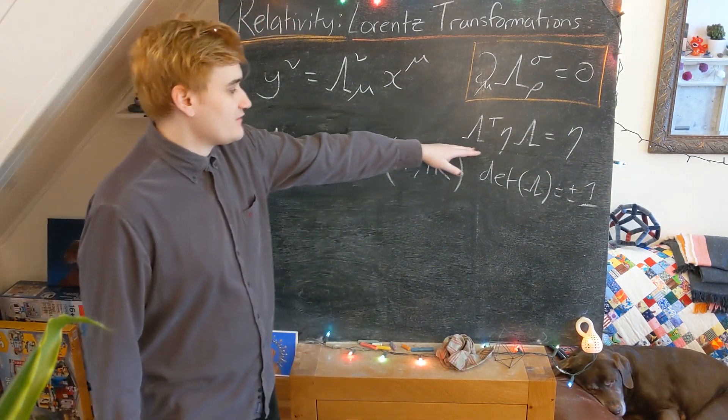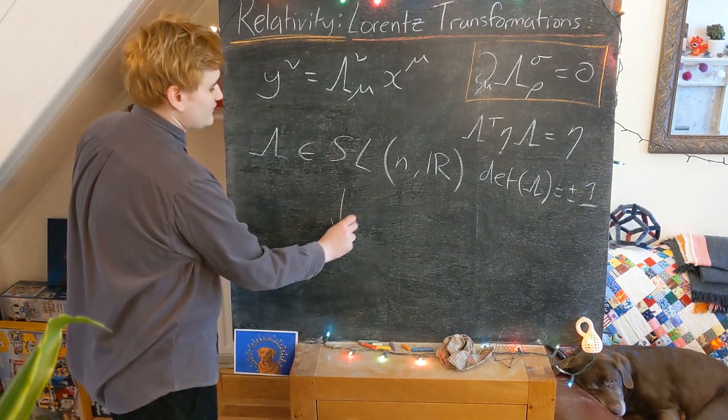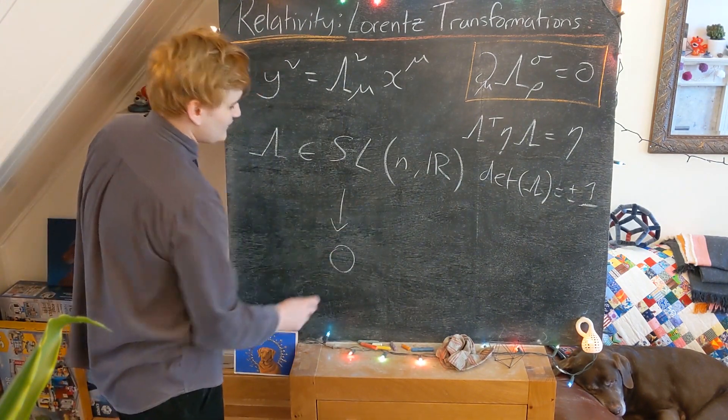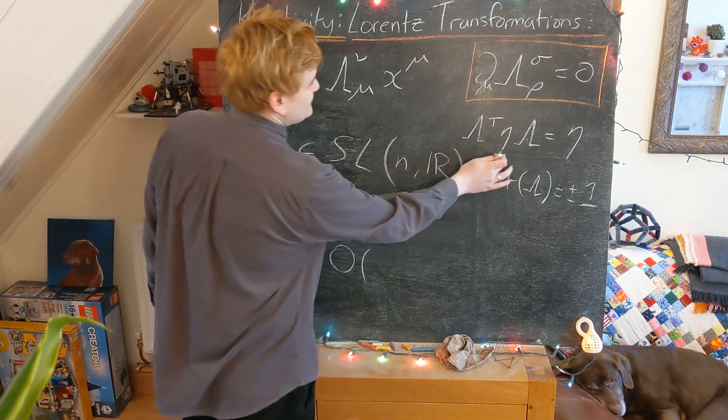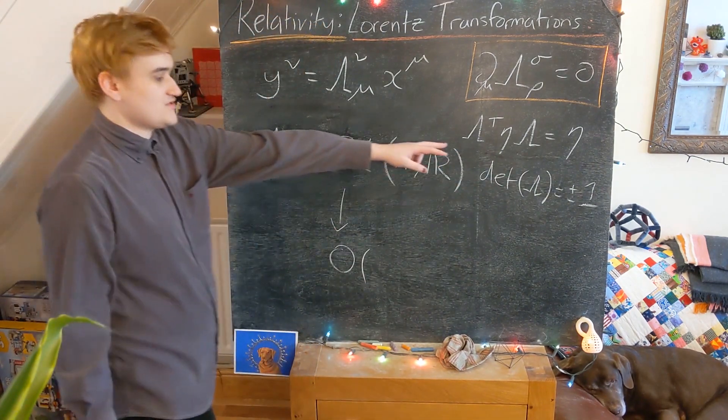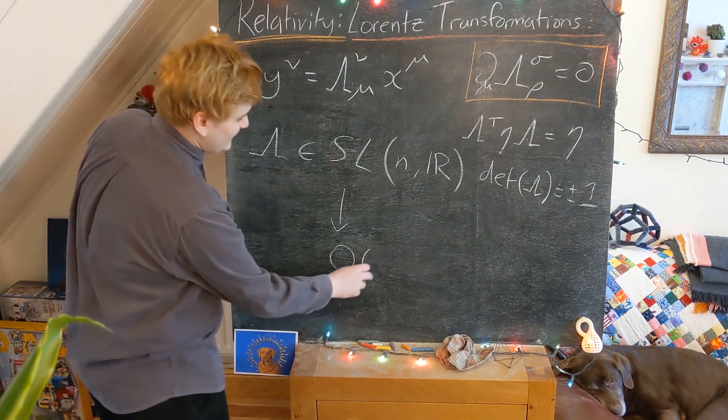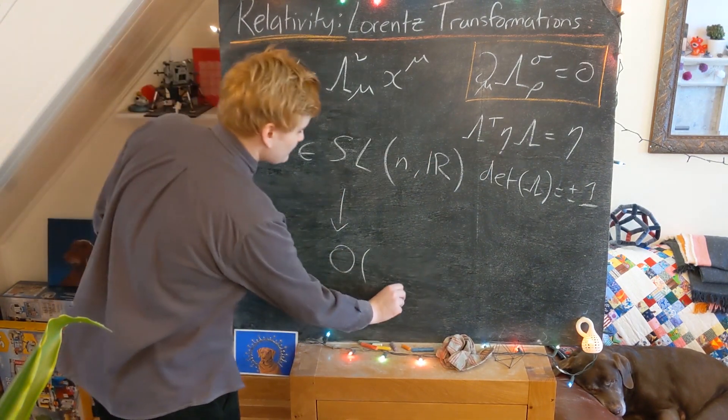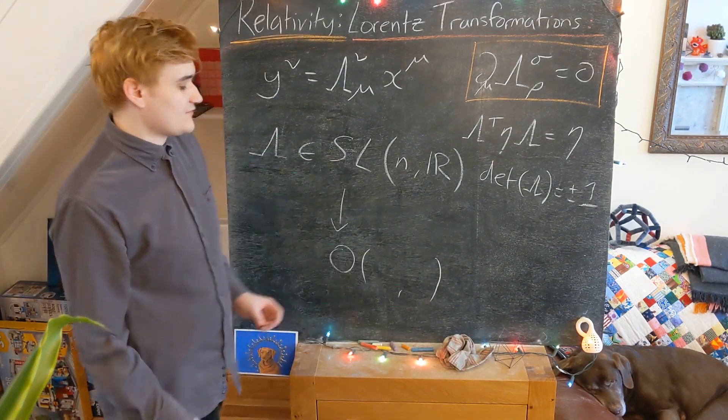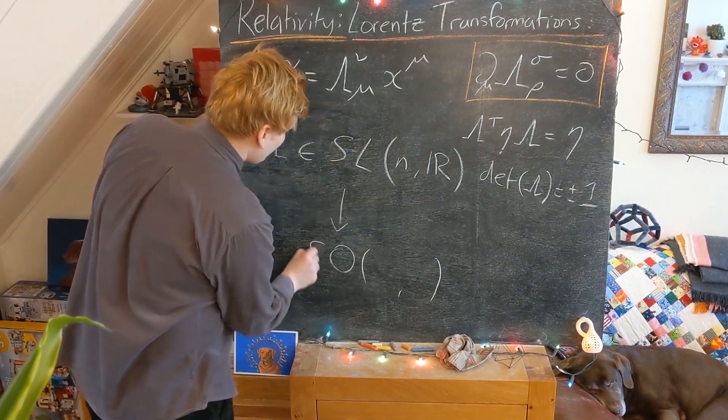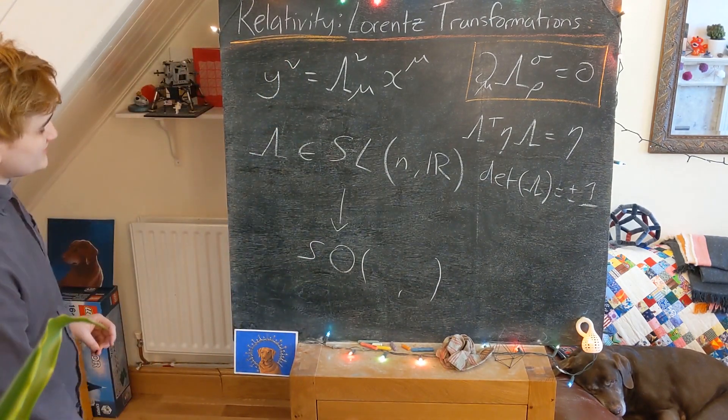Which is then going to restrict us into these orthogonal groups that we've seen because this is not just the identity here, but this has some minus signs in it. We're going to have to be in the pseudo-orthogonal groups, which have kind of a negative and a positive part to them. And then, of course, our determinant 1 is going to restrict us to the special orthogonal groups.